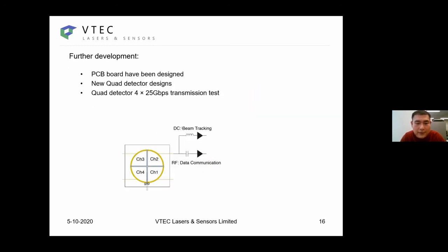Next will be some further development. We are now currently working to get the quadrant detector packaged so that we have four channel DC and RF out, so we can perform a transmission test of four channels. In the meantime, when we have the prototype ready, we can really perform and know the performance of the combined function core detector.